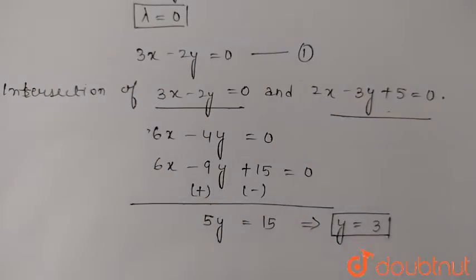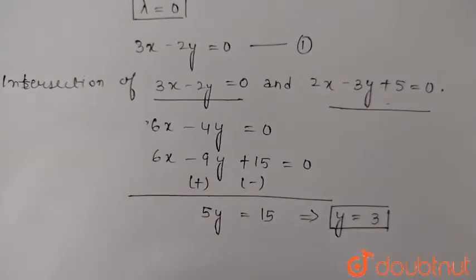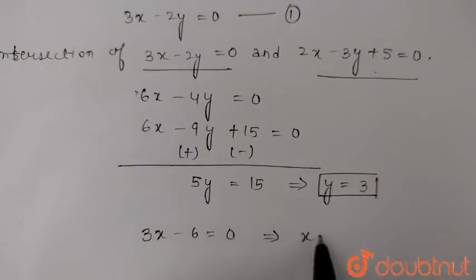This is the intersecting point. Putting this in 3x minus 2y equal to 0, we get 3x minus 6 equal to 0, so x is equal to 2.